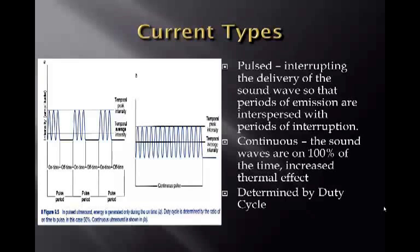Current types of ultrasound are pulsed and continuous. Pulsed interrupts the delivery of the sound wave so that periods of emission are interspersed with periods of interruption — there is on time and off time. Continuous means the sound waves are on 100% of the time, which increases the effect of raising tissue temperature. On the machine this is determined by the duty cycle: 100%, 75%, 50%, 20% — it varies per machine. 100% is always continuous. You can get thermal effects with pulsed ultrasound, so to avoid thermal effects you must adjust your intensity and/or time.